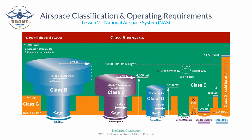The FAA wants remote pilots to understand the various airspace classes within the National Airspace System. Airspace is divided into two categories: regulatory and non-regulatory. Within these two categories there are four types: controlled airspace, uncontrolled airspace, special use airspace, and what the FAA classifies as other airspace.